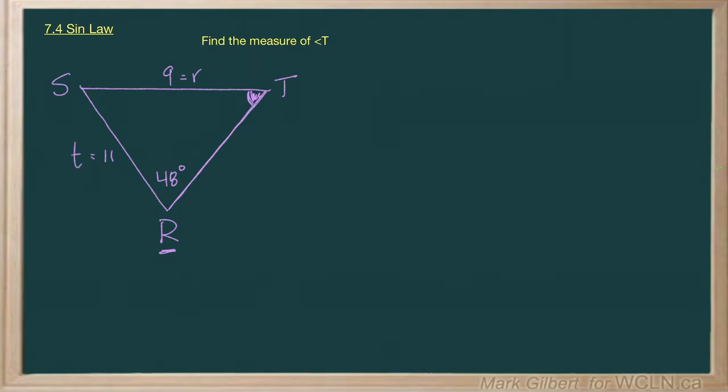And let's write down the law. We're going to use the law like this: sine R over r equals sine T over t. Remember what I said before, it doesn't matter the letters so long as it's the ratio of the sine of the angle divided by the opposite side.